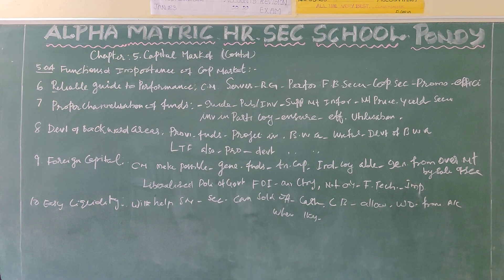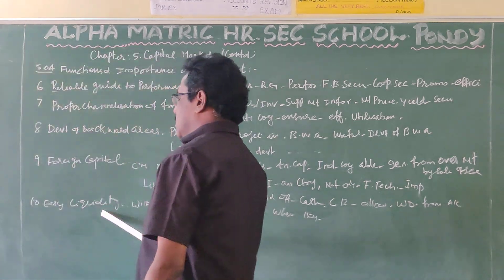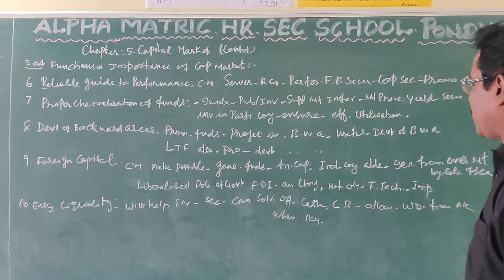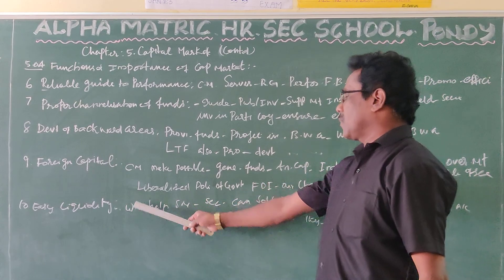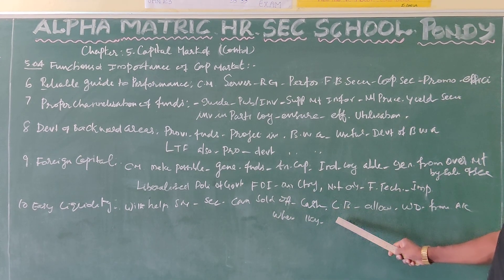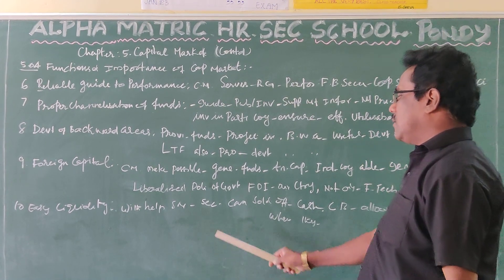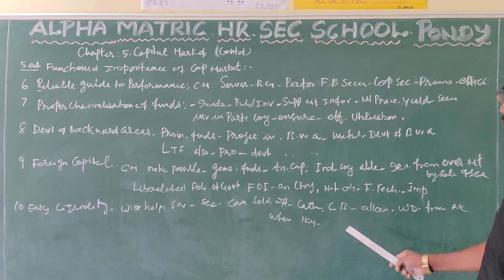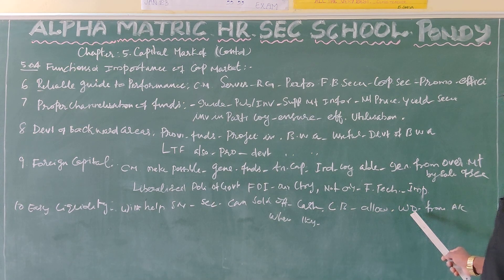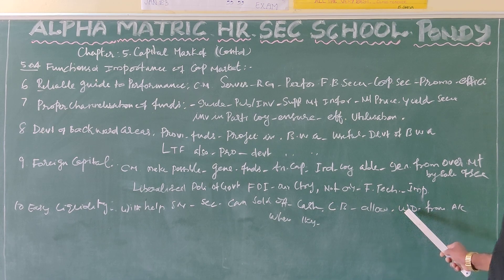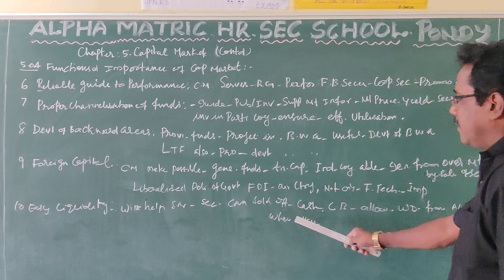Last one is Easy Liquidity. Easy liquidity means the securities or financial instruments can be converted into cash as quickly as possible, without much difficulty. With the help of the secondary market, investors can sell their securities and they can be converted into cash easily. At the same time, the capital market allows commercial banks to allow customers or depositors to withdraw their money from their account when they need funds.